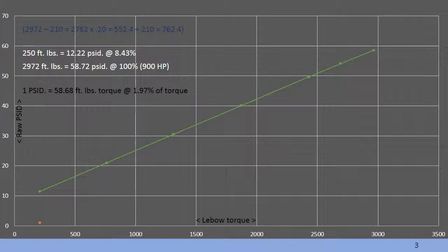The maintenance manual tells us to plot this data and determine the pressure at two specific foot-pound values. And those values for this particular engine and model airframe are 250 foot-pounds and 2972 foot-pounds.